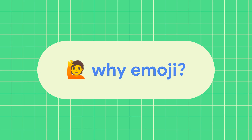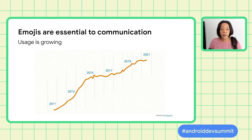First, you may be wondering why we're focusing on emojis — what are the issues with emojis that need to be fixed? Well, we know that emojis are becoming more and more a critically important part of communication. Emoji usage has consistently grown over the last 10 years, and this year global emoji usage has reached an all-time high. Users on some apps send billions of emojis every day, and more than one in five tweets now contain an emoji.